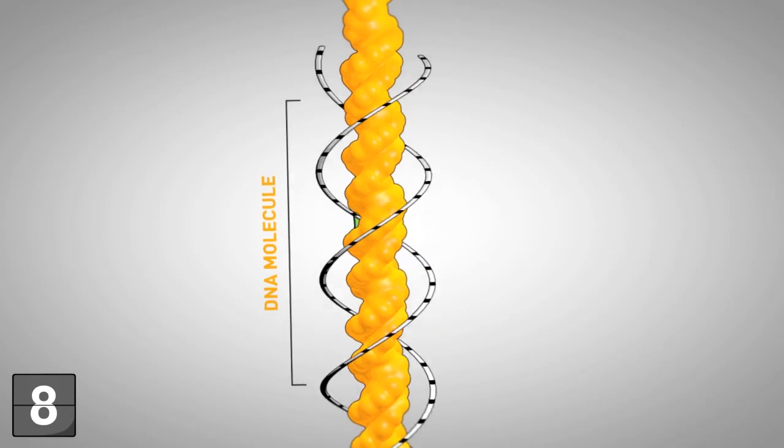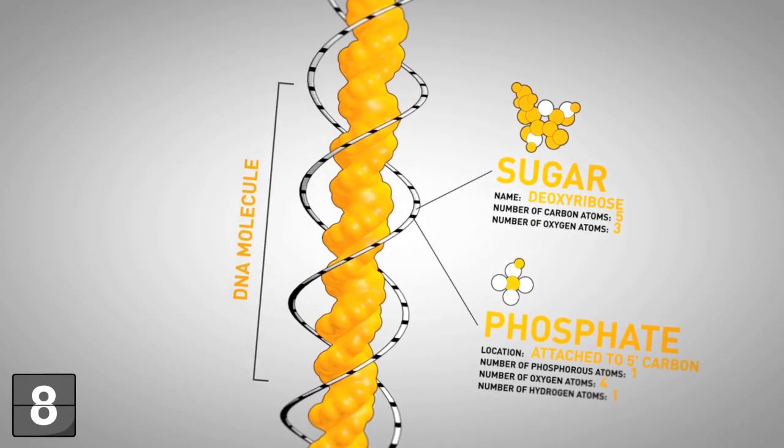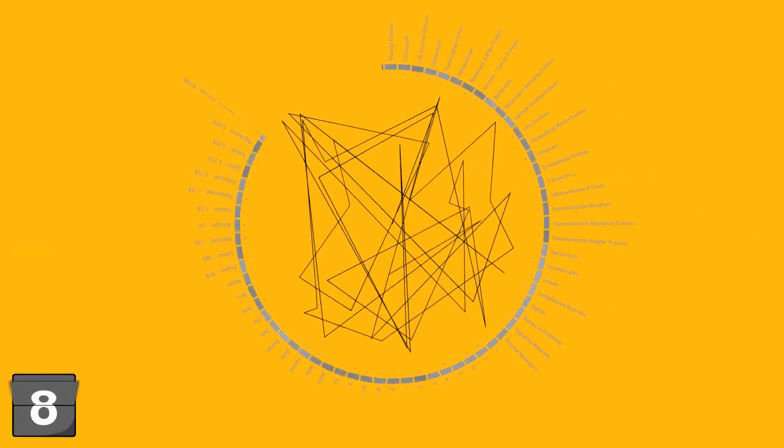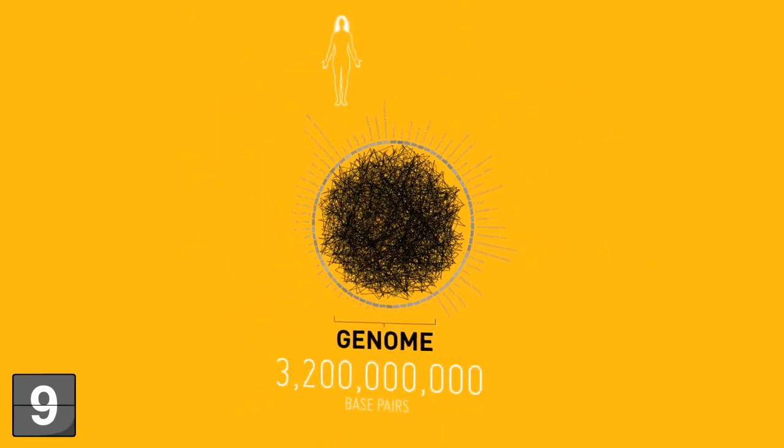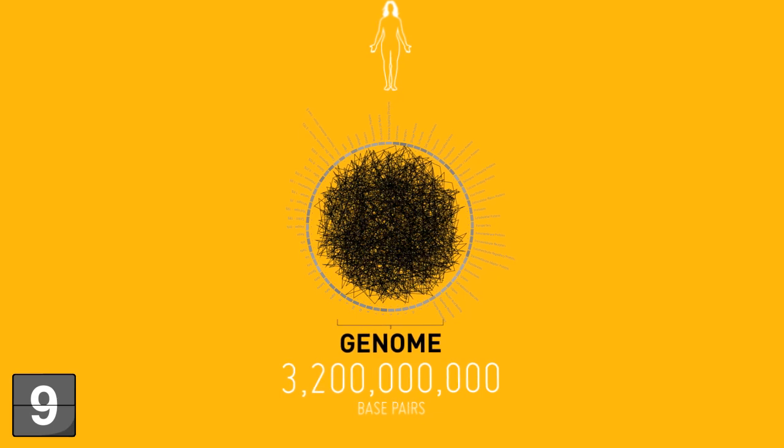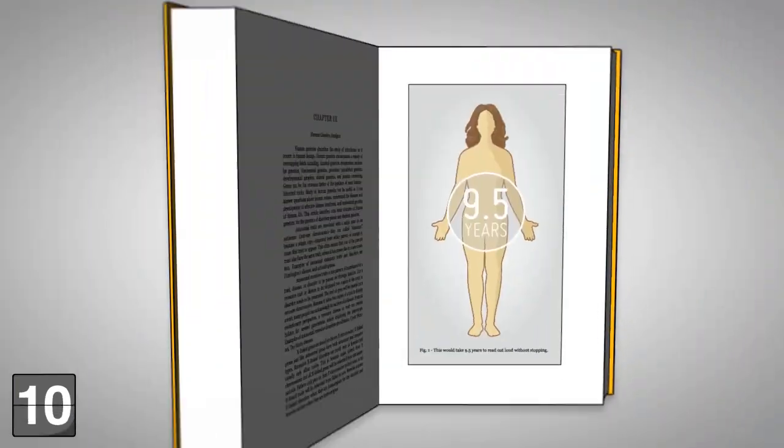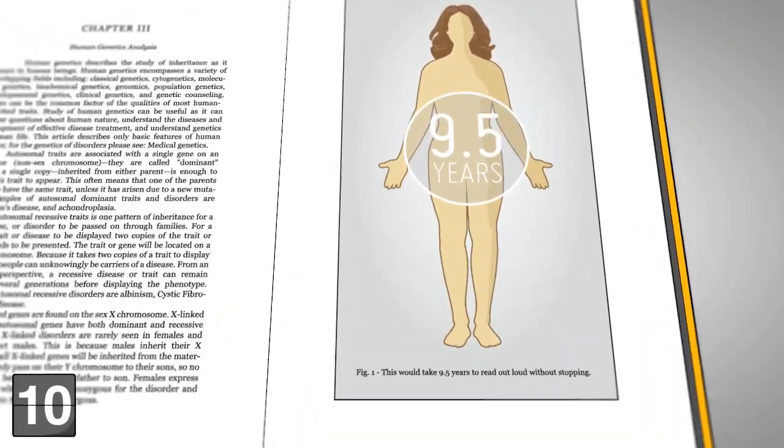The sides of the ladder are made of alternating sugar and phosphate molecules. The entire DNA sequence is called a genome and in humans is 3.2 billion base pairs. This would take 9.5 years to read out loud without stopping.